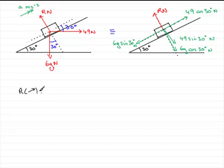So by resolving upwards, we're looking at all the forces that act upwards. So we've got the component of the 49 newtons acting upwards. That's going to be 49 cos 30 degrees. That's this one here.